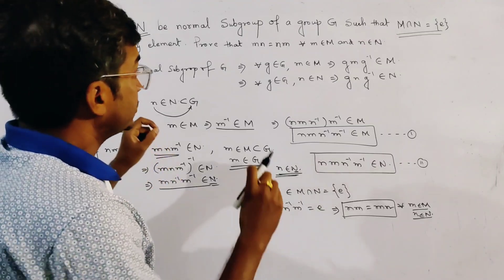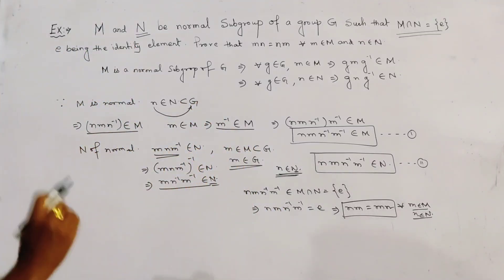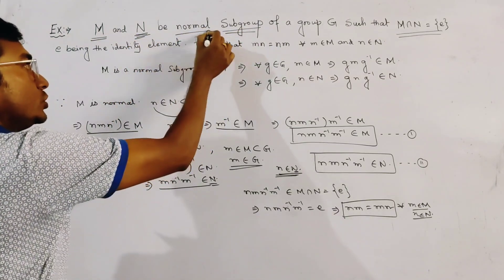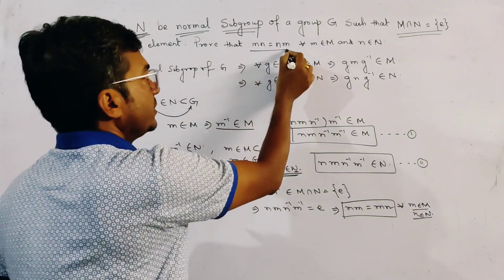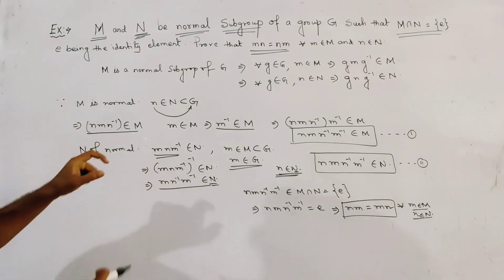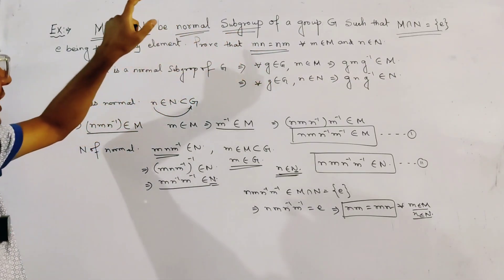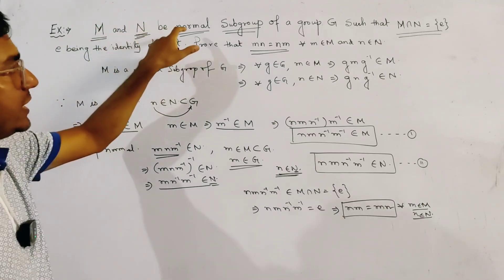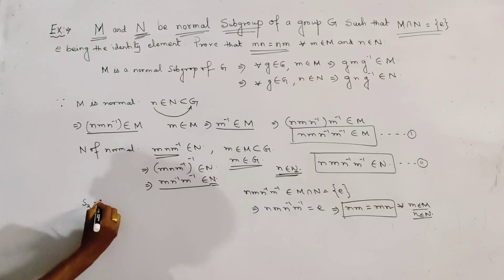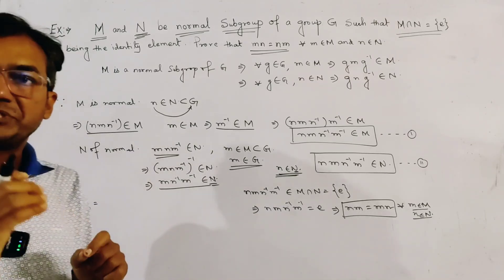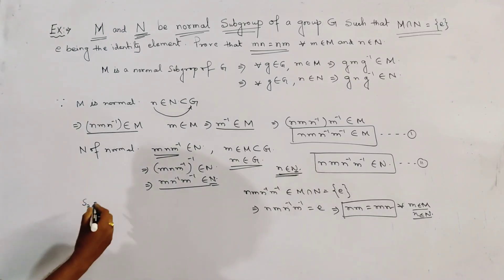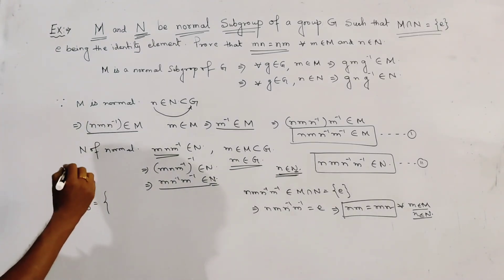There is an important note: this result does not hold if any one of M or N is not a normal subgroup. We give an example to show that mn need not equal nm if any one of M or N is not normal. We consider the symmetric group of 3 symbols, generally taken to be 1, 2, and 3.